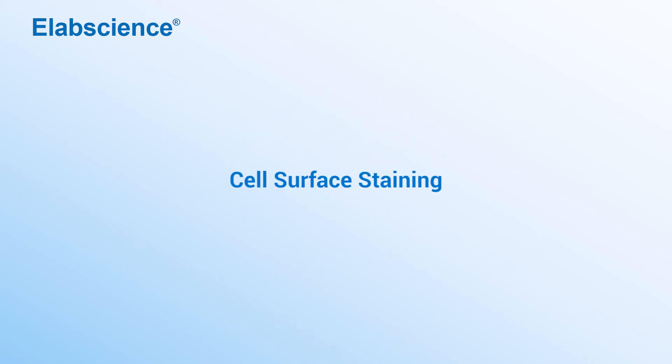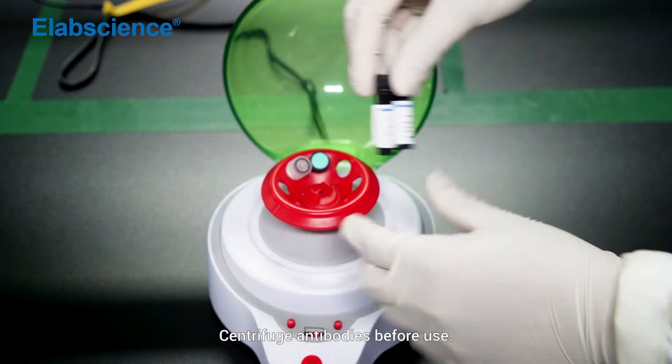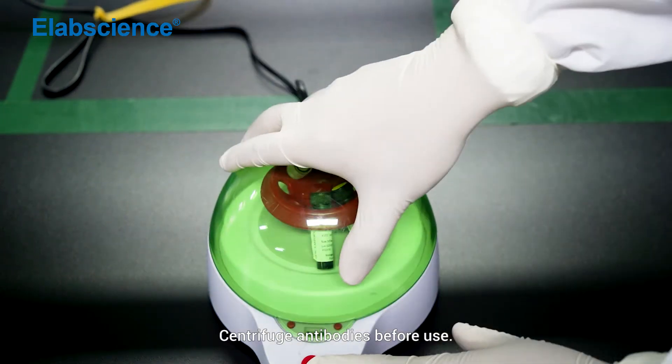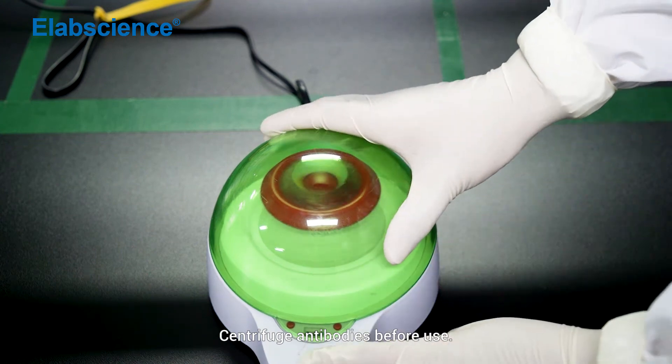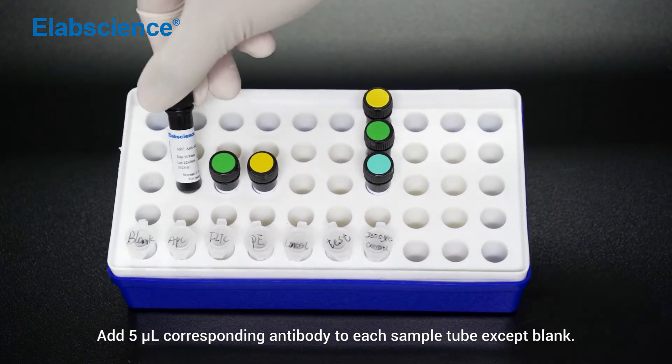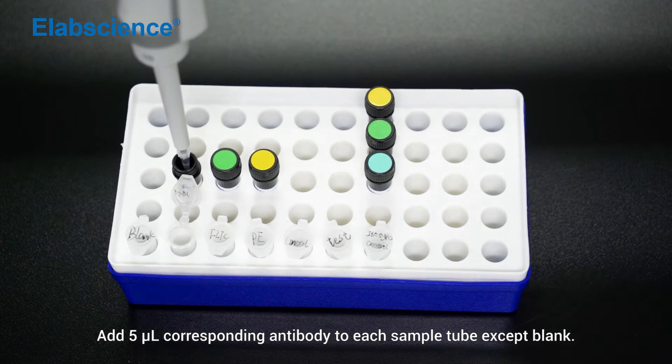Cell surface staining. Centrifuge antibodies before use. Add 5 µL of corresponding antibody to each sample tube except blank.